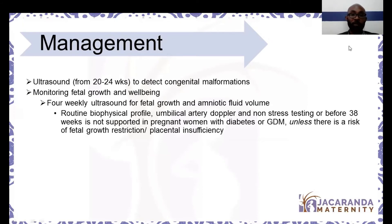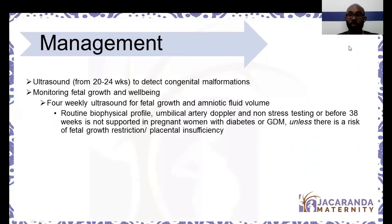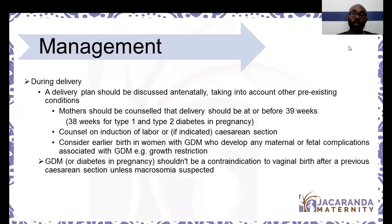Ultrasound is very valuable in managing mothers with gestational diabetes mellitus. The first ultrasound at 20 to 24 weeks is to detect malformations, and then we recommend doing four-weekly scans to measure fetal growth — monitoring for macrosomia and excess amniotic fluid. Routine umbilical Doppler, non-stress testing, and biophysical profile are not usually supported routinely for all gestational diabetic patients, unless there is a risk of fetal growth restriction or placental insufficiency.